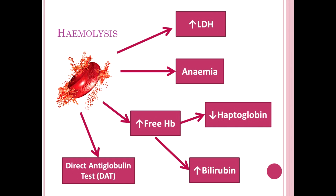Hemolysis is the destruction of red cells — from microangiopathic causes, mechanical shredding by older mechanical heart valves, or autoimmune destruction. When a red cell is torn apart, several trackable markers are released: LDH (lactate dehydrogenase) is released with any high cell turnover, but is very non-specific. Destruction of red cells will cause anemia — also not specific to hemolysis. Free hemoglobin (hemoglobin outside a red cell) is a more specific marker.